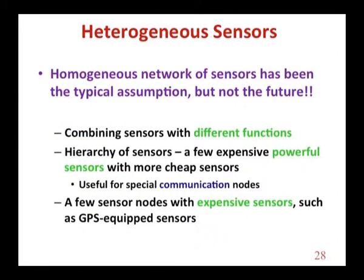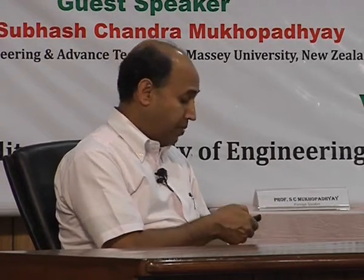Second, you will have heterogeneous sensors — sensors of different types giving different outputs and measuring different parameters. We may think our protocols assume homogeneous sensors, but unfortunately that may not be the case. You will have different types of functionality and different types of sensors — some cheap, some expensive. You may need special communication protocols, and also expensive sensors like GPS-type sensors in your system.